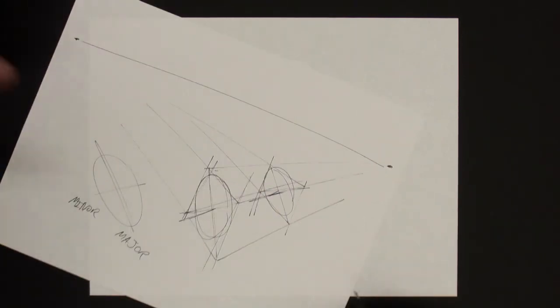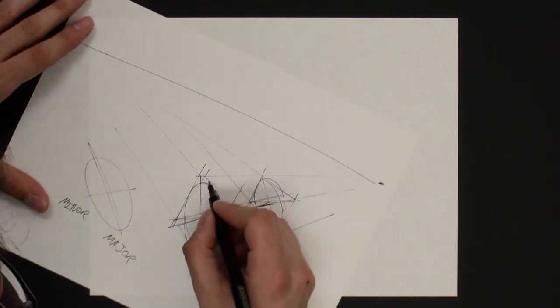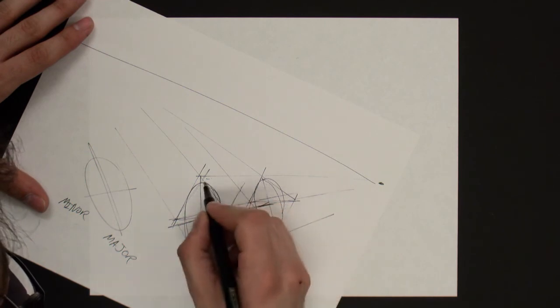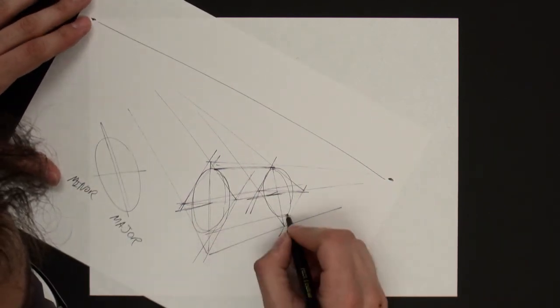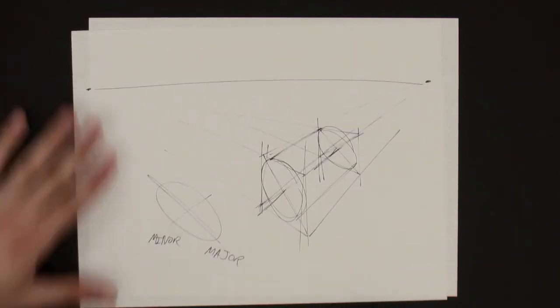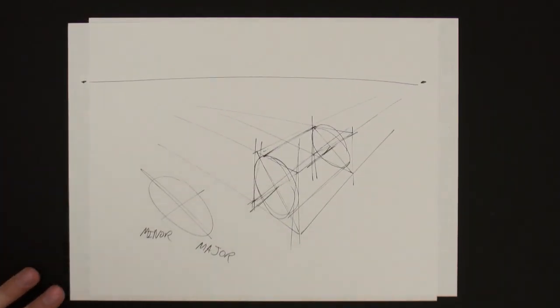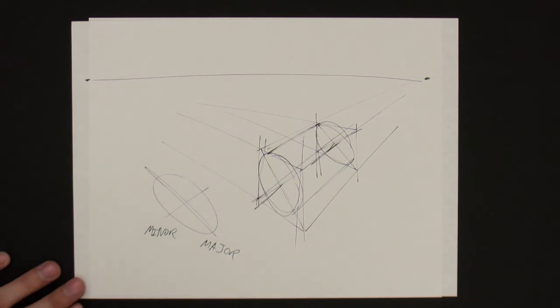OK, so now to get the cylindrical shape, I just want to connect those edges where the face of the ellipse no longer will be visible. And then there you have it, a cylinder in two-point perspective.